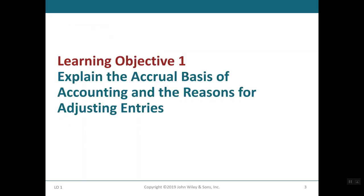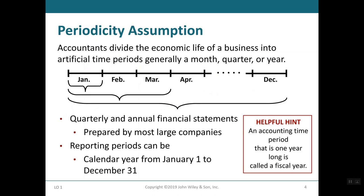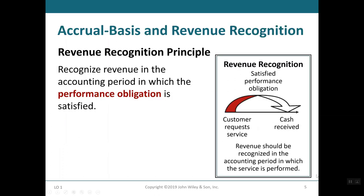Learning Objective 1: explaining the accrual basis of accounting and the reason why we have adjusting entries. Accountants divide the economic life of a business into artificial periods — it could be one month, quarterly, or by year. Many transactions affect more than one of these periods. Determining the amount of revenue and expense to report in a given period can be difficult. Reporting periods can run from January to December 31st.